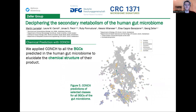We applied CONC to all the BGCs present in the human gut microbiome to elucidate the chemical structure of their products. In Figure 5, we show the predictions made by CONC of selected classes for all the BGCs of the gut microbiome, showing for instance a concentration of thiazoles in an area of the UMAP that corresponds to thiopeptides. Similarly, we can find some interesting clustering of potential benzodiazepine compounds, whereas beta-lactam compounds are found across many places in the whole clustering.